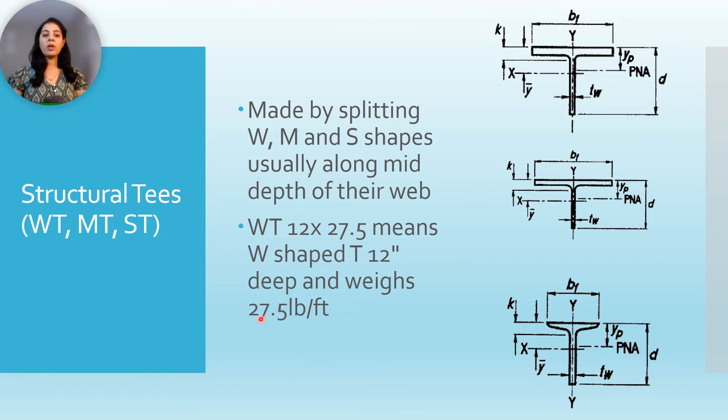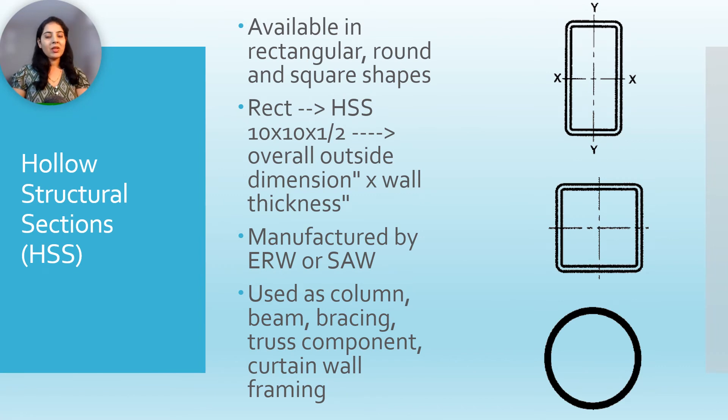Hollow structural sections are rectangular, square, or round. They are manufactured by ERW, that is electric resistance welding method, or SAW, submerged arc welding method. These sections allow designers and builders to produce aesthetically interesting structures and efficient compression members.